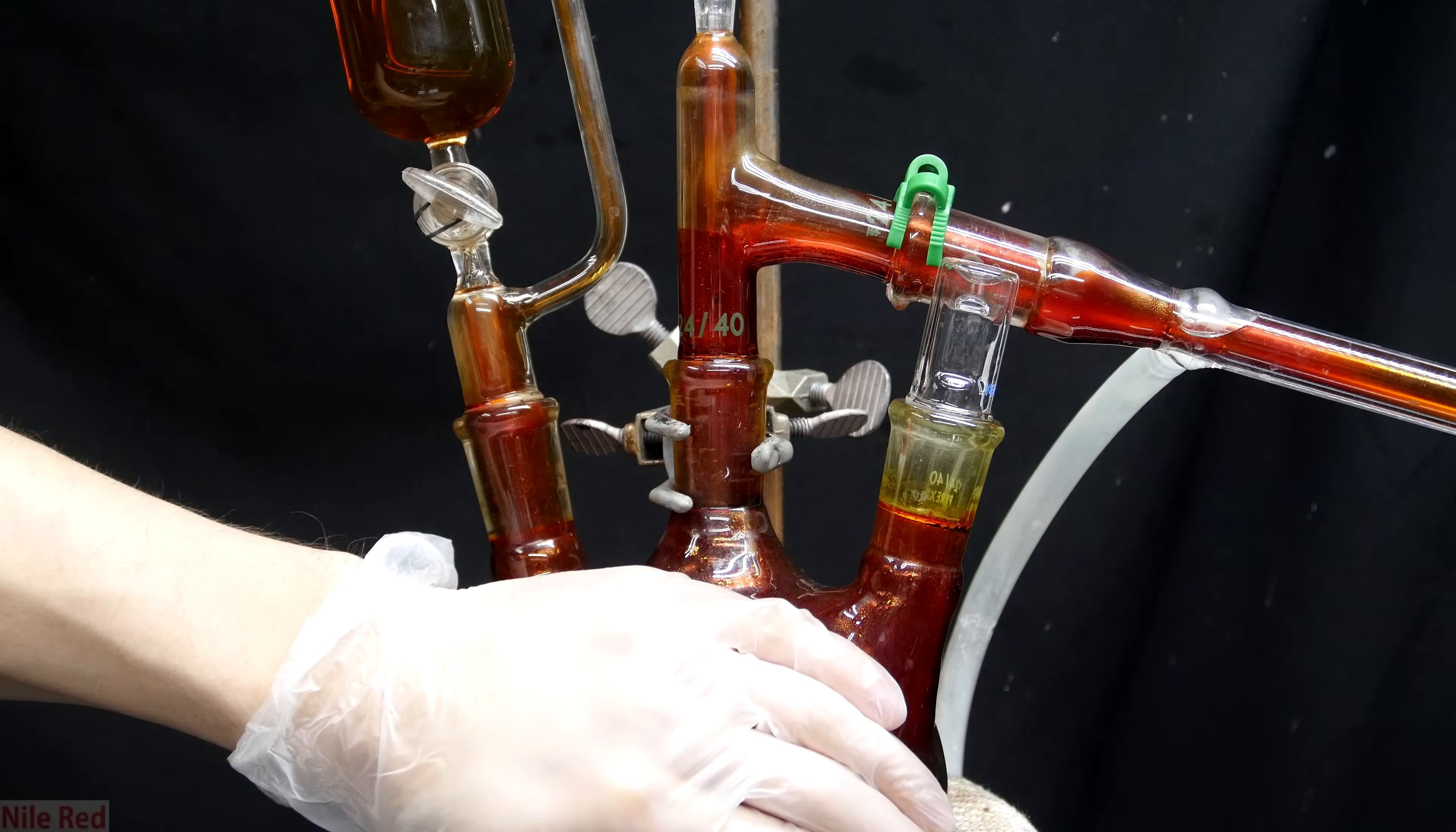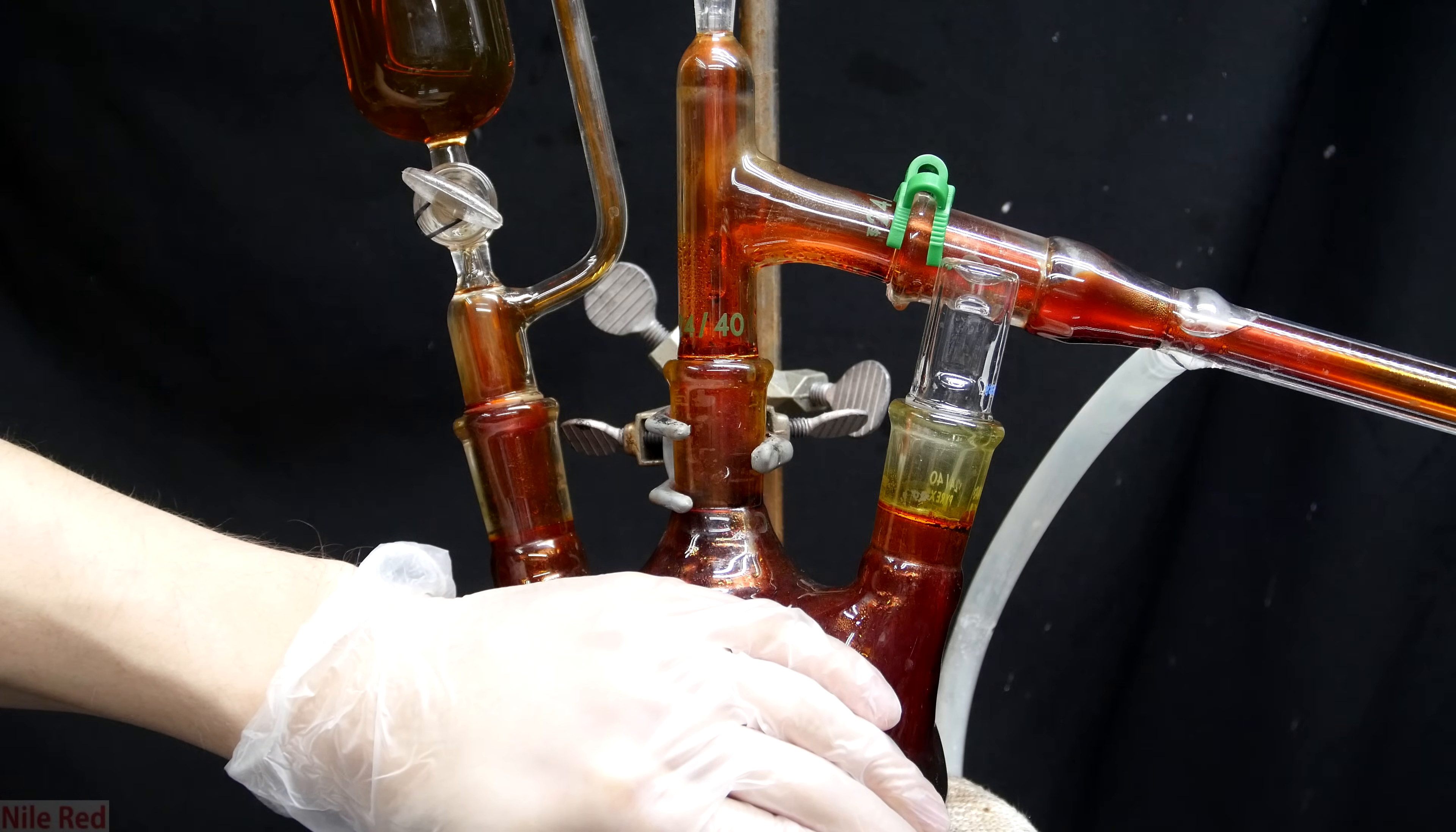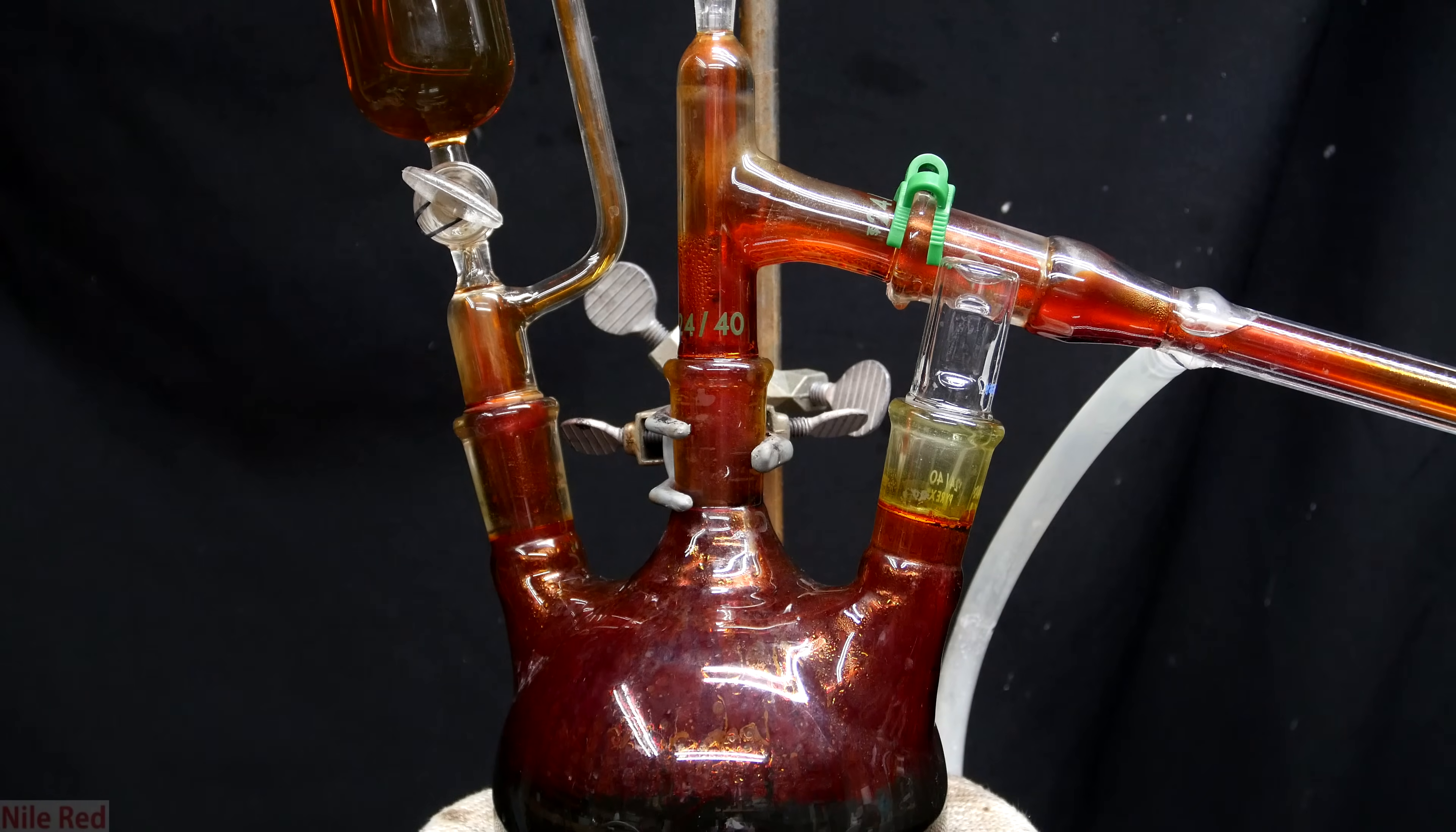Another thing that I thought was cool was if I place my hand onto the flask, I can actually stop the distillation from happening. You can clearly see the vapor front of bromine being pulled down, and when I take my hand away, it starts to climb again.